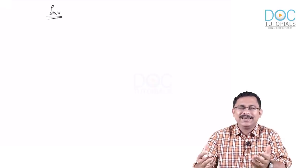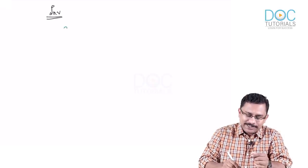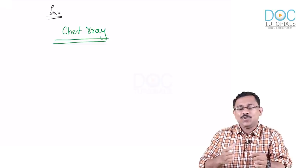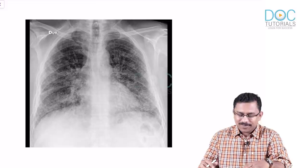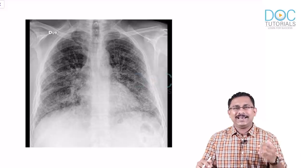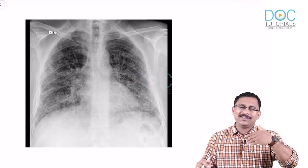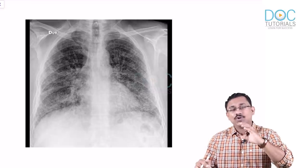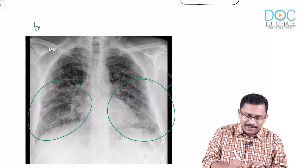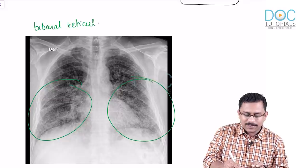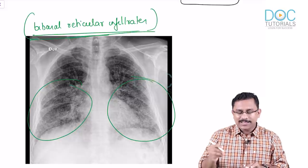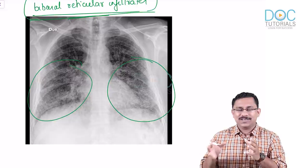To evaluate a suspected IPF patient, you start with a chest X-ray. In a patient with suspected IPF, you will get bilateral reticular infiltrates which are predominantly basal. Apical involvement may occur in late disease, but it begins basally — bibasal reticular infiltrates on the chest X-ray.